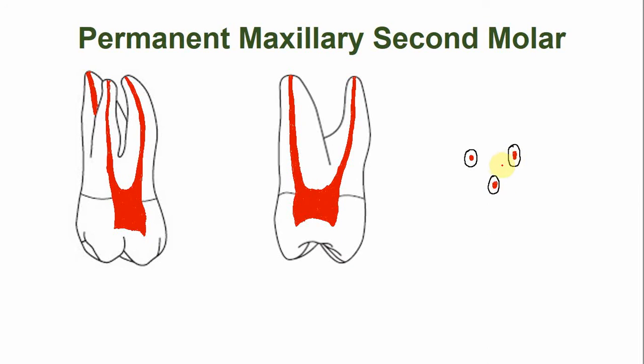In summary, the maxillary second molar usually has four pulp horns that correspond to the cusps. There are three canals: one in the mesio-buccal root, one in the disto-buccal root, and one in the palatal root.